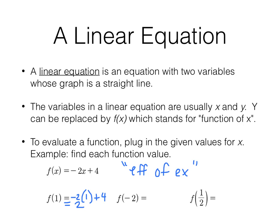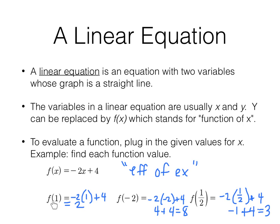For f(-2), substitute -2 for x: -2 times -2 is 4, plus 4 is 8, so f(-2) = 8. For f(1/2), substitute 1/2 for x: -2 times 1/2 is -1, plus 4 is 3, so f(1/2) = 3. We evaluate a function by plugging in the given value for x — that's all it means.